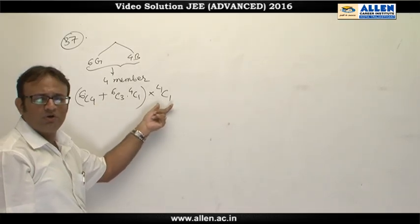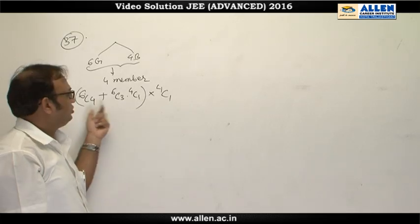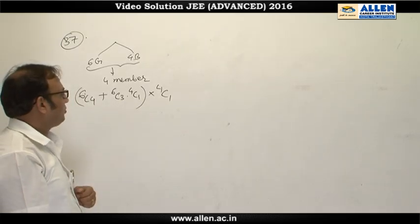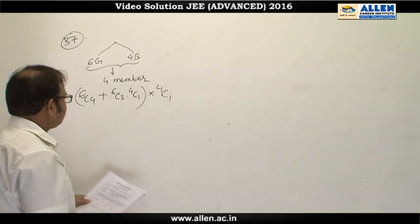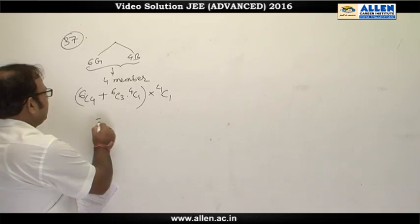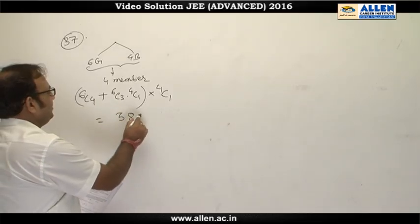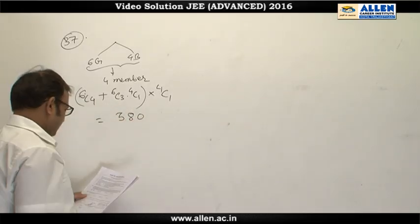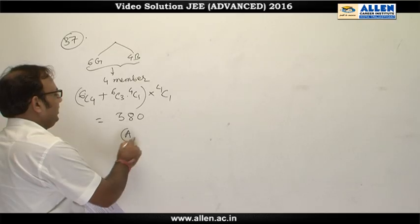This gives the total number of ways of forming the committee. The correct answer after computation comes out to be 380, and that is option number A.